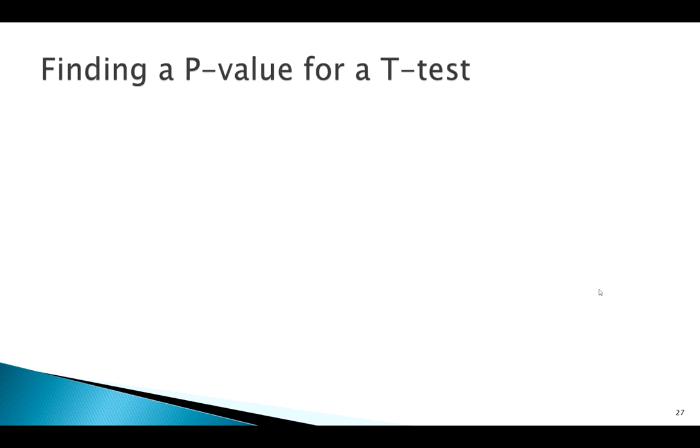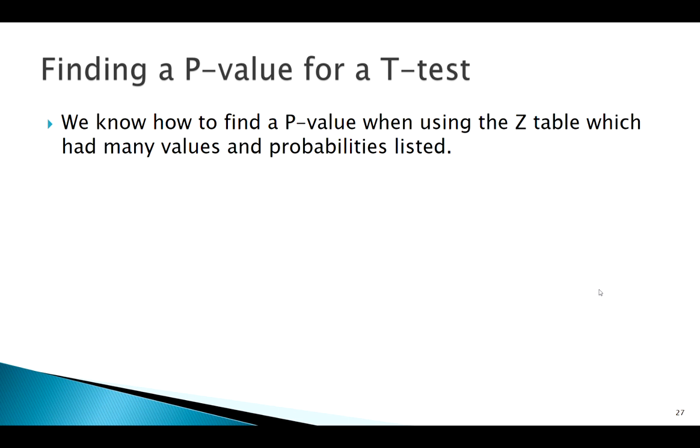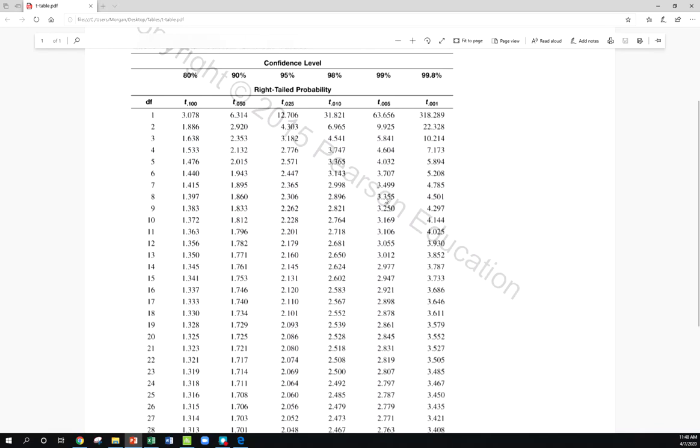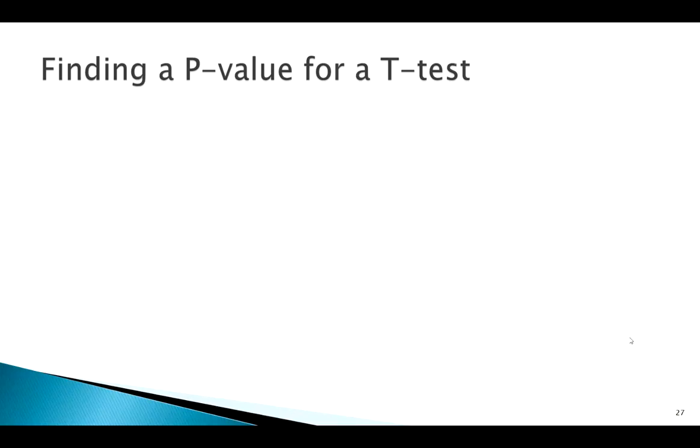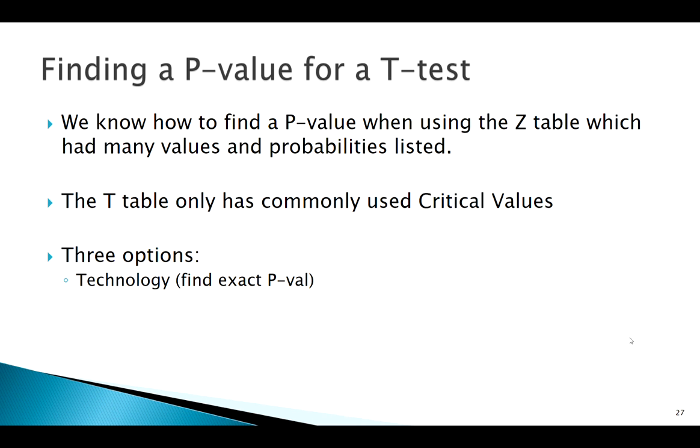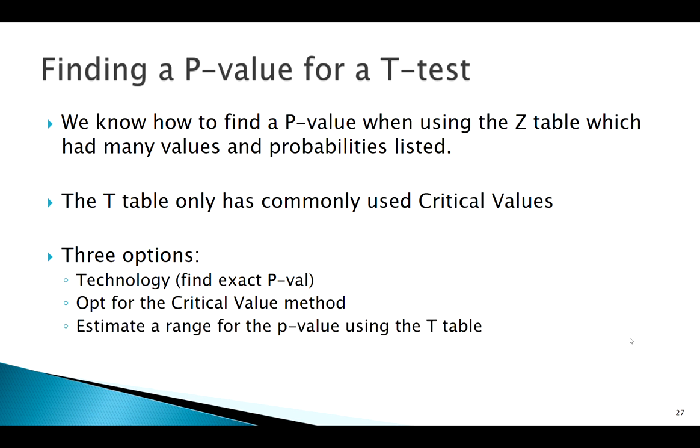Here is where we kind of run into some limitations. We know how to find a p-value with our z table—our z table had every z value that you could want to two decimal places and a whole bunch of probabilities to four decimal places. But remember what the setup of our t table looks like: we only have these commonly used values, only critical values here. Of course, we can always use technology to find an exact p-value, or we could just go for the critical value method. We know the critical value method and p-value method will lead us to the same conclusion. With a t-test, if we feel confident in our critical value method, we can just skip the p-value. But we usually do want the p-value, and if you feel comfortable with that, we can estimate our p-value from our table.